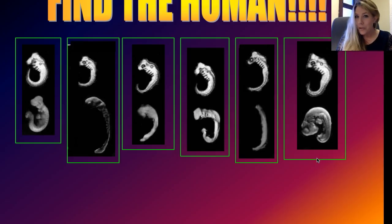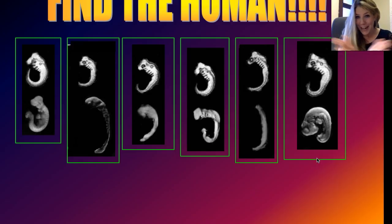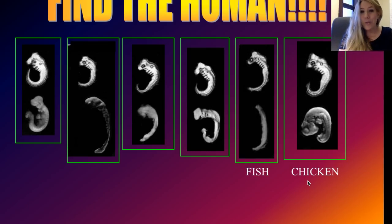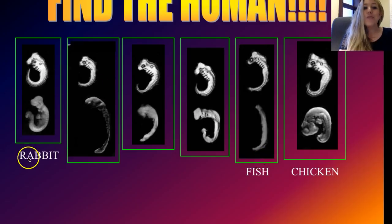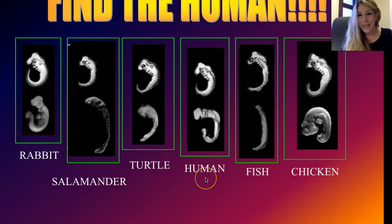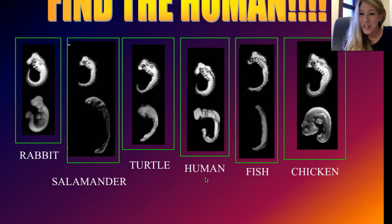You have three seconds to vote for which embryo is human. If you voted for the last one, that was a chicken. Next to it is a fish. The first one is a rabbit. Then there's a salamander, a turtle, and finally the human. How many of you got it on the first try? Didn't think so.